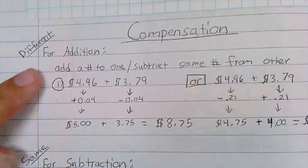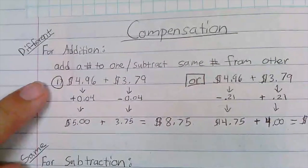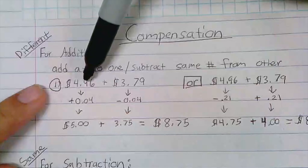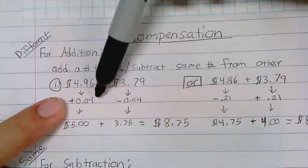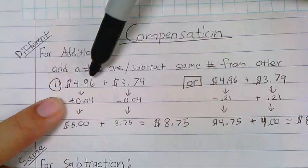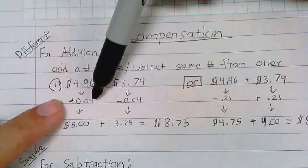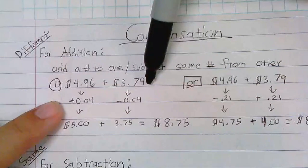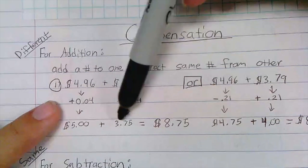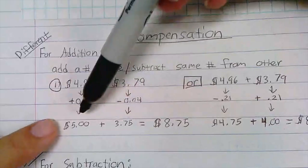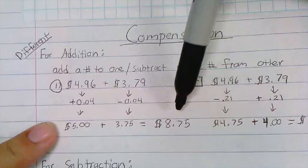For example, if I have $4.96 and I'm adding it to $3.79, then I can make this an easier number to work with by going up to $5.00. So I'm gonna add 4 cents to $4.96 to get myself to $5.00. Since I added 4 cents here, I need to take it away from the second number, so I'm going to subtract 4 cents from 79 cents and I'll get $3.75. Now $5.00 and $3.75 I can add right in my head and I get $8.75.